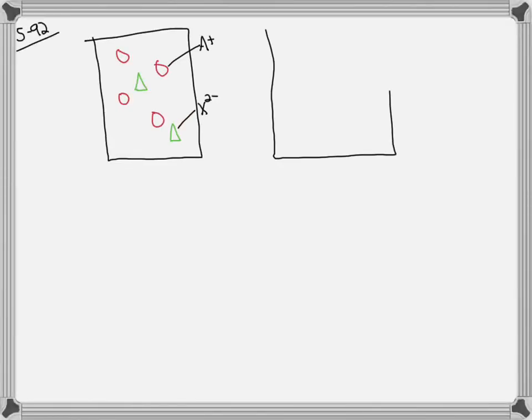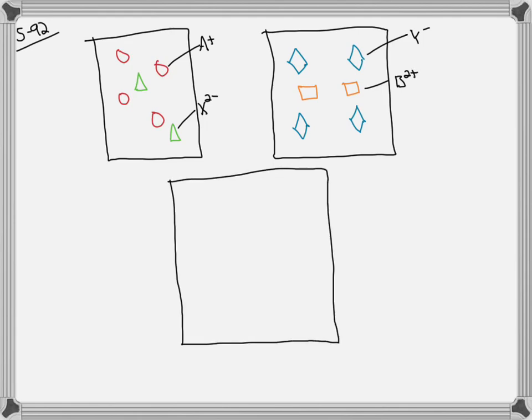For this question, we have two solutions where the solutes have completely dissociated. One is an A-plus and X-2-minus solution, the other is a Y-minus and a B-2-plus solution.